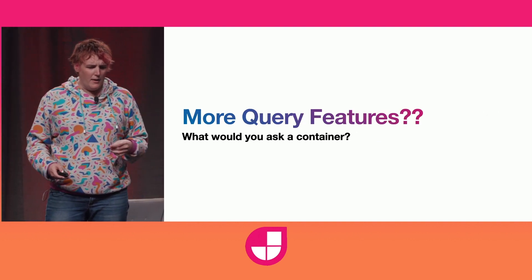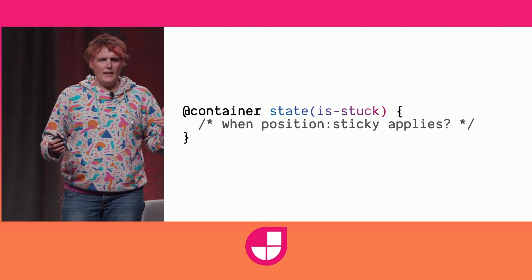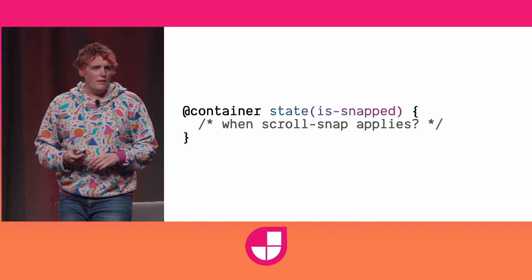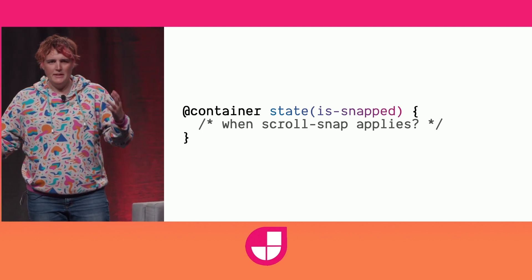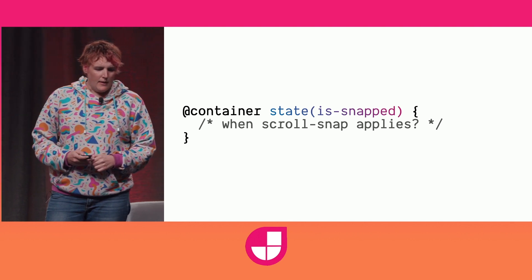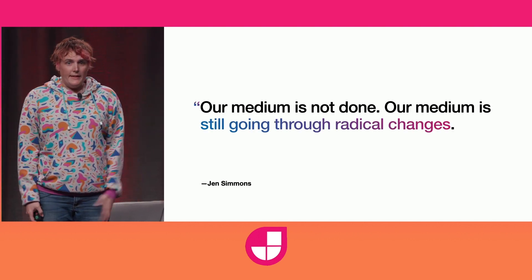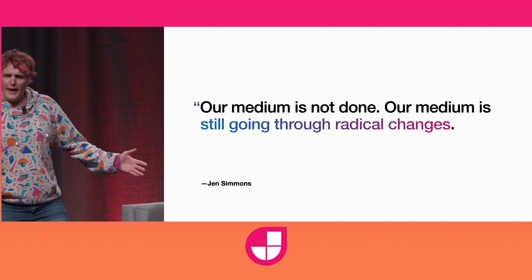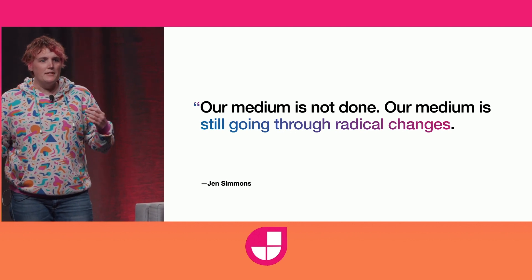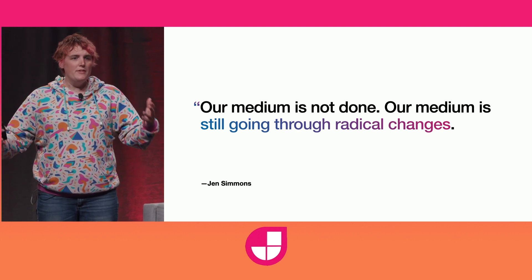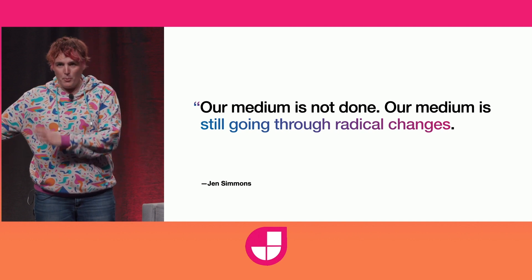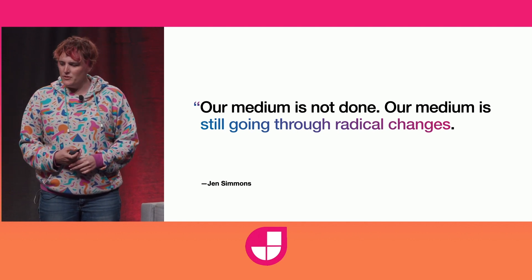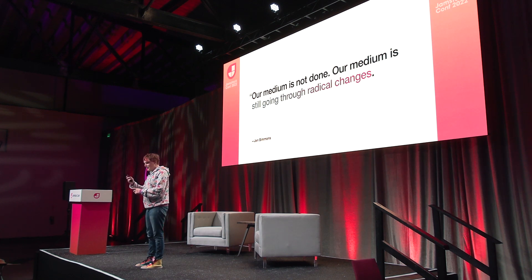There are more things we might want to query — maybe states. Is something positioned sticky and currently stuck? Can we change contents based on that 'is stuck' state? Can we check whether something is scroll-snapped and currently snapped? So basically, our medium is not done. Some things we thought were impossible for 38 years are now shipping, and that will continue to happen. The CSS working group is always interested in feedback on these prototypes and specs as we're working on them, and also new ideas. If you have ideas or are interested, start playing with stuff and give us feedback. Enjoy the jamming.